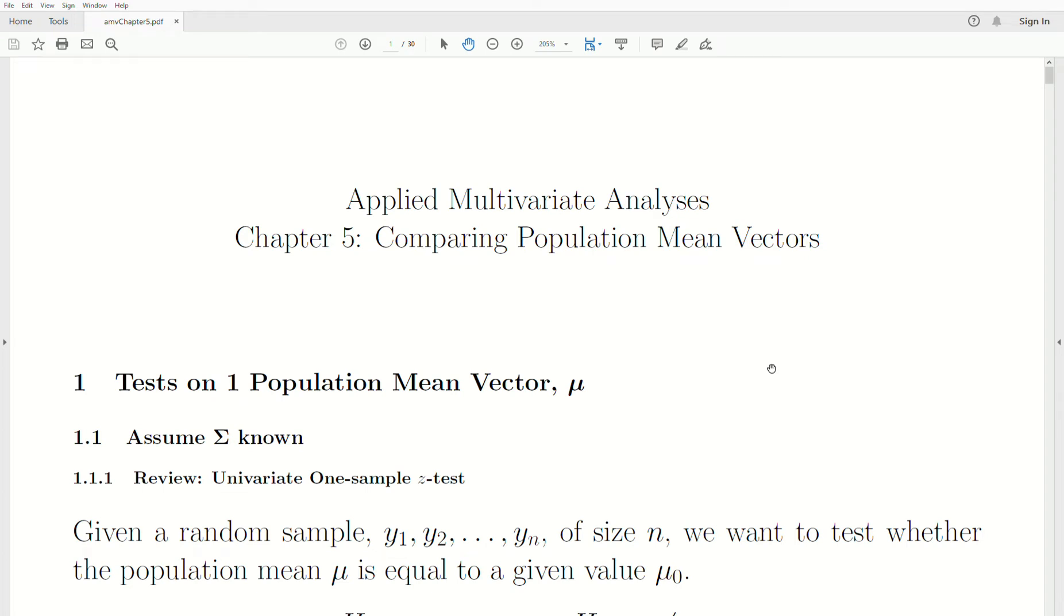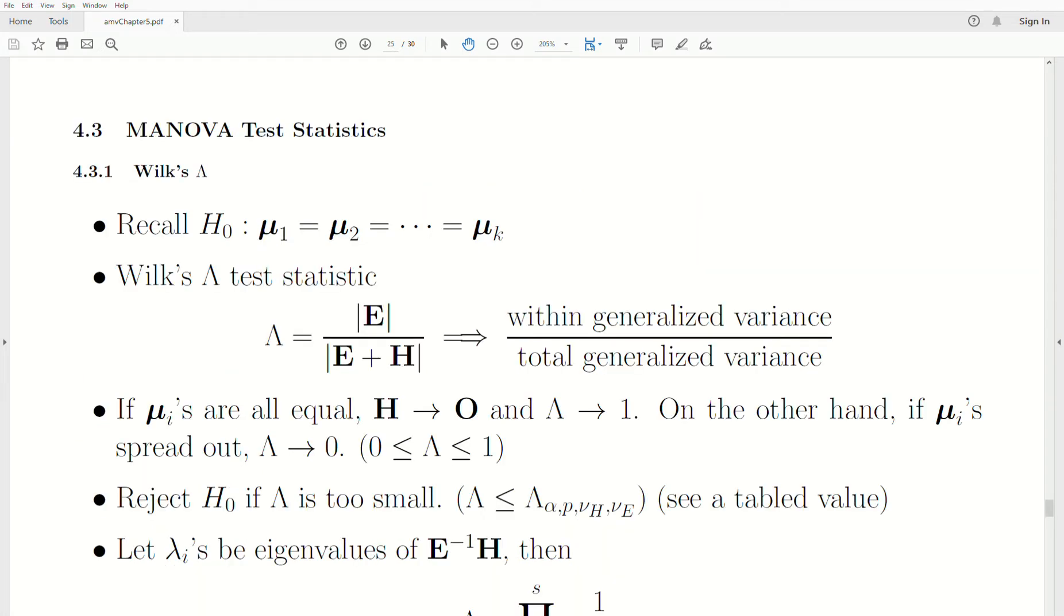Hello, this is the next video in a playlist that I'm calling Applied Multivariate Analysis. We're in Chapter 5, part of this playlist, which I'm calling Comparing Population Means. And let's jump right to today's topic, which is the MANOVA statistics. Now this is Part 2 of MANOVA. In Part 1, we gave a heuristic argument of what's going on in ANOVA. And now we're going to review the four tests, four common tests in MANOVA.